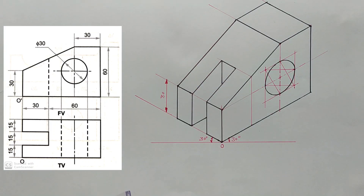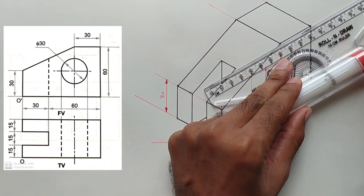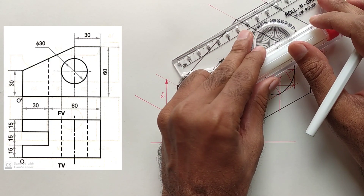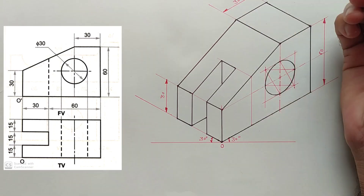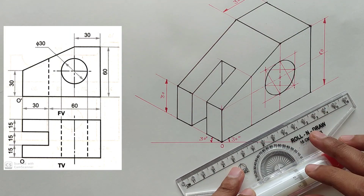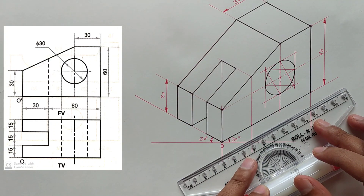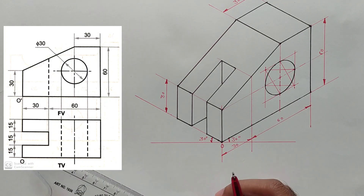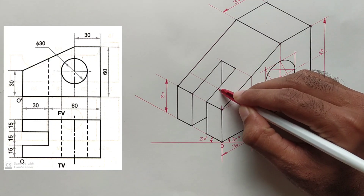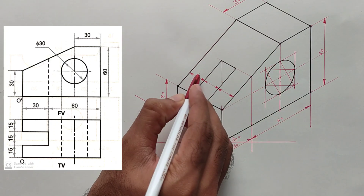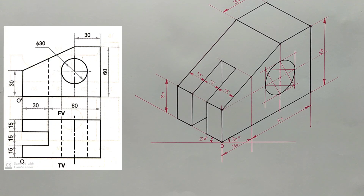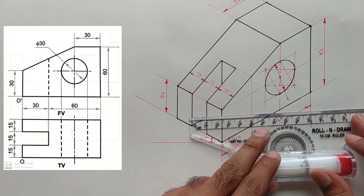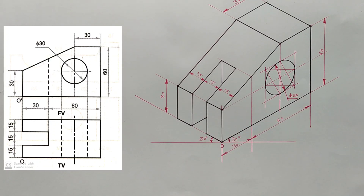The drawing of the isometric view is completed. Now the last part is to give all the dimensions appearing in the front view and top view. The height is 60 millimeters and this distance is 30 millimeters. Draw a single line and give two dimensions — 30 mm and 60 mm from the front view. Draw a line and give all dimensions from the top view: 50, 50, 15, 15, and 15 millimeters. The diameter of the circle is 30 millimeters. The isometric view is now completed with all its dimensions.